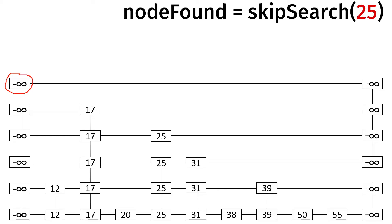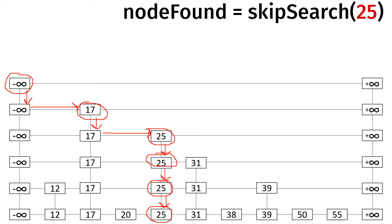We always start at the beginning — the top left of the skip list, the highest level with the smallest key. We drop down and try to scan forward. Positive infinity is not less than or equal to 25, so we drop down again. 25 is less than or equal to 25; positive infinity is not, so we stop at this level and drop down. All these 31s are not less than or equal to 25, so we keep going down until we finally reach the bottom level. We try to go down one more time but can't because the below reference is null — so we return this node.